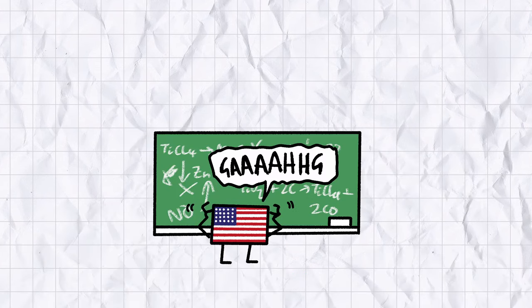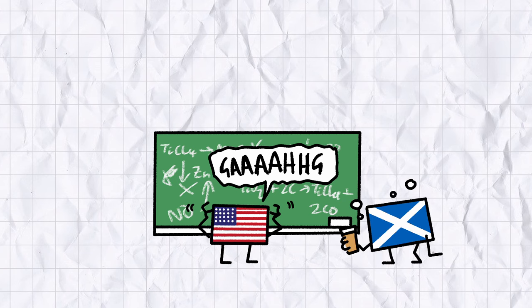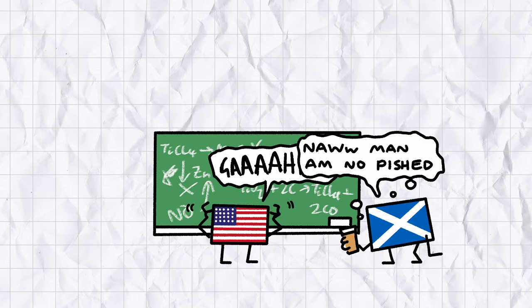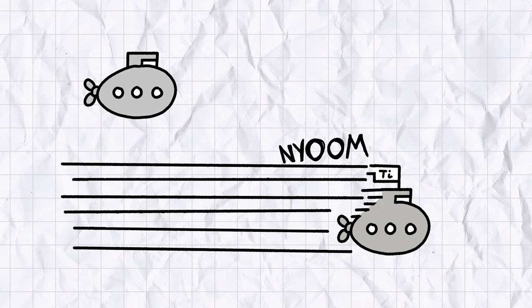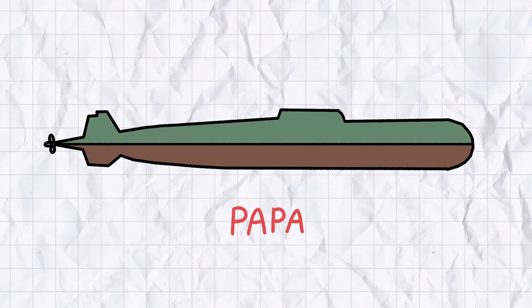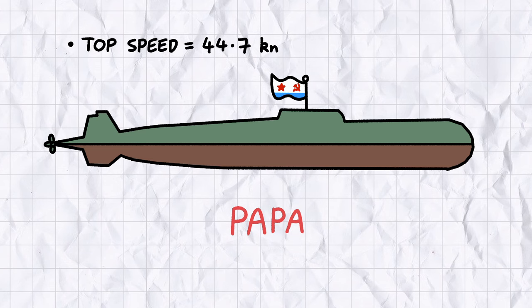Back then, the Americans knew about as much about making titanium submarines as the Scottish did about staying sober past 2pm, so finding out the Russians had cracked it first came as a massive blow. Titanium submarines were strong, lightweight, and blazingly fast. The PAPA, another titanium submarine developed by the Soviets, was capable of reaching top speeds of 44.7 knots, and it's still the fastest submarine in history to this day.